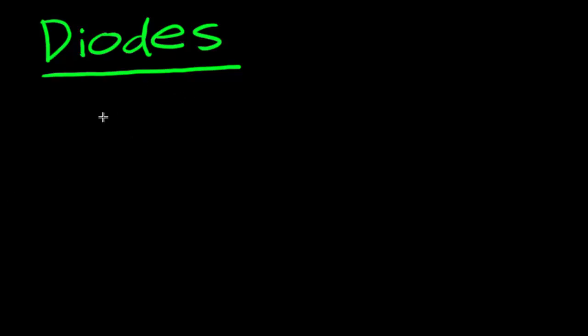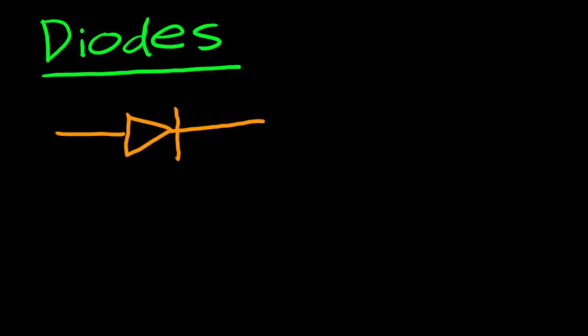The schematic symbol for a diode is actually just a simpler version of the schematic symbol for an LED. It's a triangle with a line on it — that's the schematic symbol for a regular diode. The anode is at the base of the triangle, and where the line is drawn is the cathode.